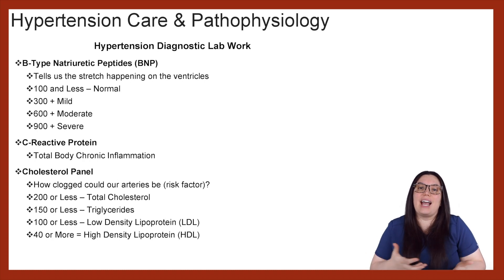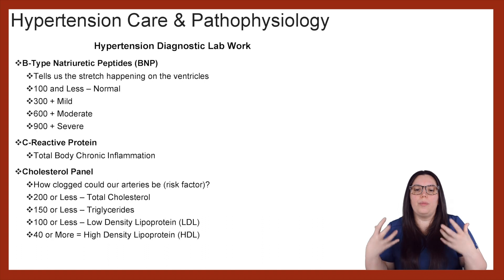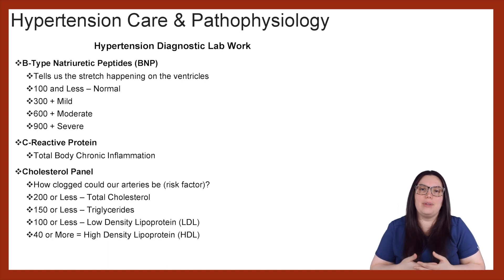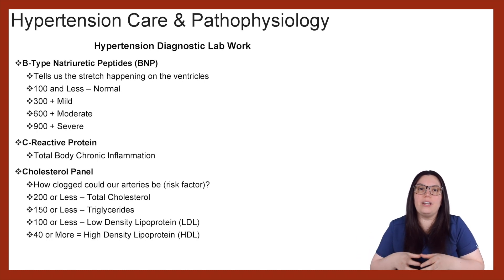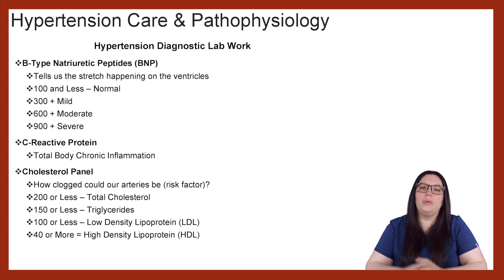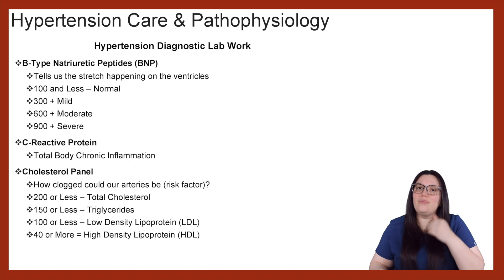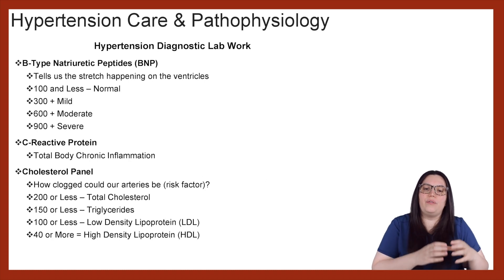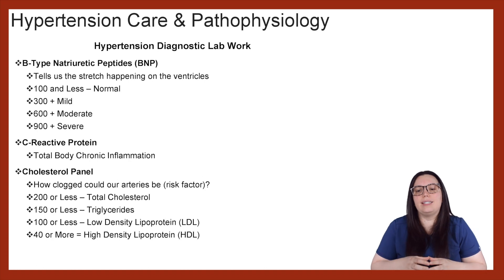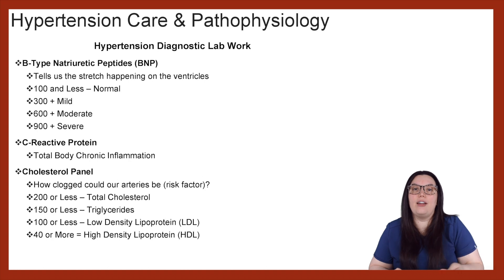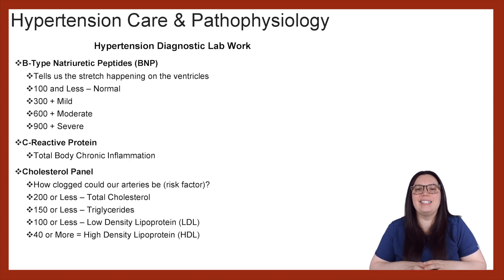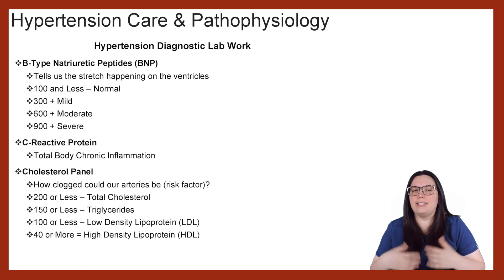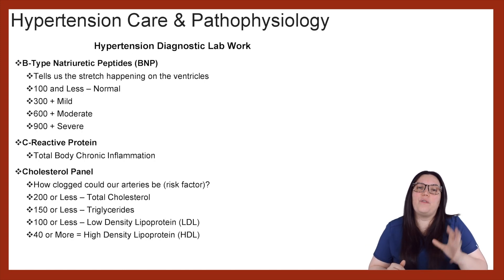Another thing we can get is our C-reactive protein, which will tell us the total body chronic inflammation happening systemically. And then lastly, cholesterol panels — how clogged are our arteries? When it comes to total cholesterol, we want 200 or less. Triglycerides, we want 150 or less. LDL — that's our bad cholesterol — we want 100 or less. And then when it comes to HDL — the good stuff — we want that to be 40 or more.